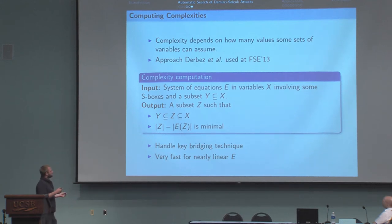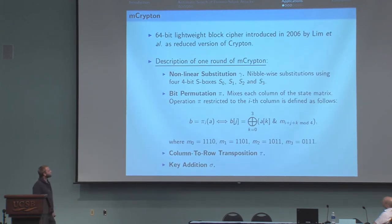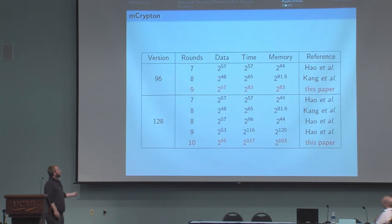That's all the algorithms in our tool. Now let's see some applications. We first applied it to the block cipher MCrypton. MCrypton is an SPN with four 4-bit S-boxes, and its linear layer is bit-oriented. We selected this block cipher because several researchers published results of Demirci-Selçuk attacks against MCrypton.